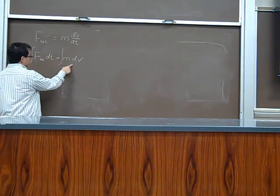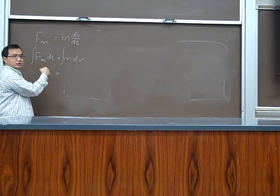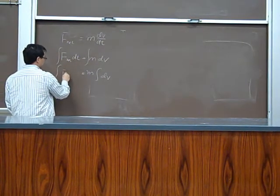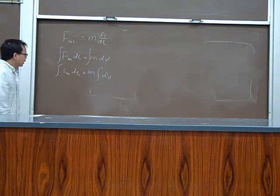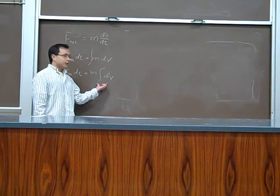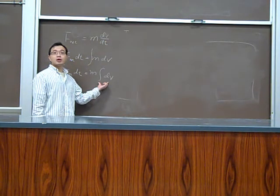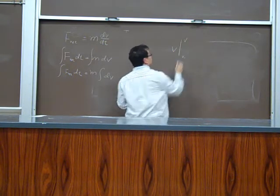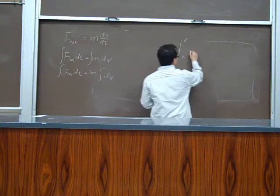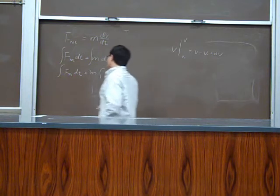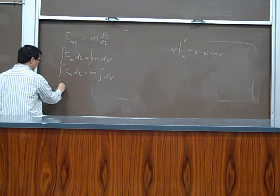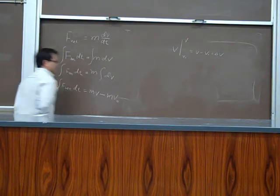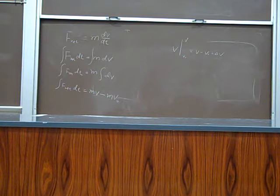The right-hand side, you can pull out the mass. It's a constant. So it's M integral of dv. And this integration can directly be evaluated. This will give you delta v. It will give you v from initial time velocity to the final velocity. So this is actually v minus v0. This is time integral of Newton's second law.